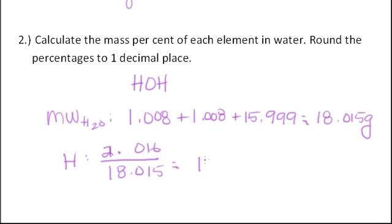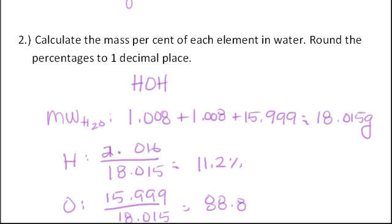Oxygen would be 15.999 over 18.015, corresponding to 88.8 percent. And that's mass percents.